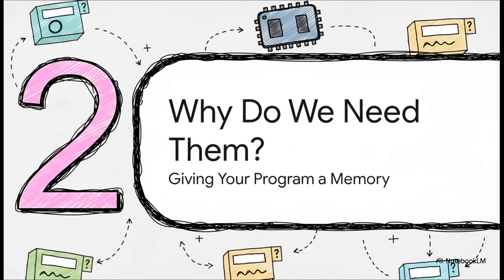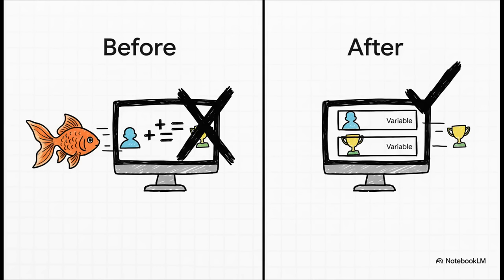Okay, so we've got these little boxes. But why? Why do we even need them? Let's talk about giving your program a memory. Honestly, without variables, a program would have the memory of a goldfish. No joke. It would forget everything the instant it happened. Variables are what let a program actually hold on to important stuff, like your name after you type it in, or the answer to a calculation it just did, or your high score in a game. It's absolutely essential.